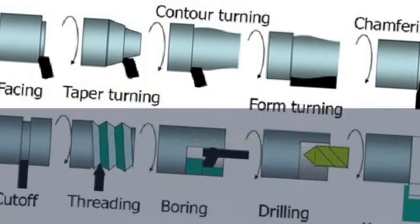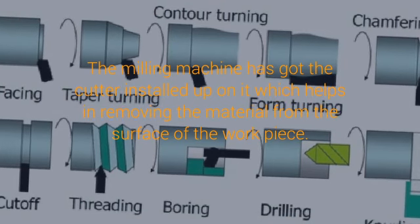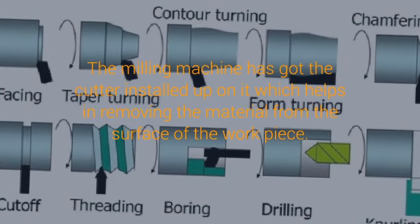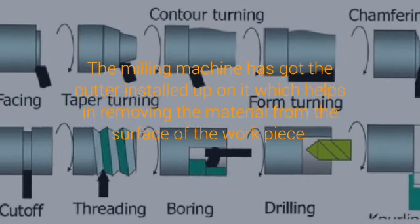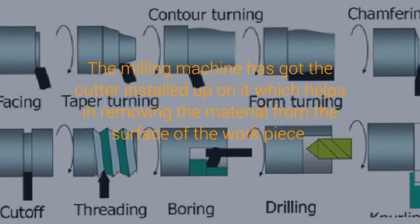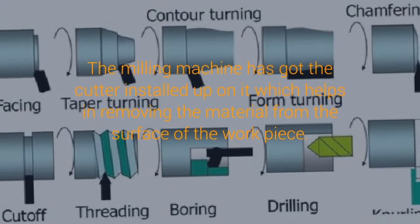The milling machines are also known as the multi-tasking machines, which are multi-purpose machines capable of milling and turning the materials as well. The milling machine has a cutter installed on it which helps in removing the material from the surface of the workpiece. When the material gets cooled down, it is removed from the milling machine.